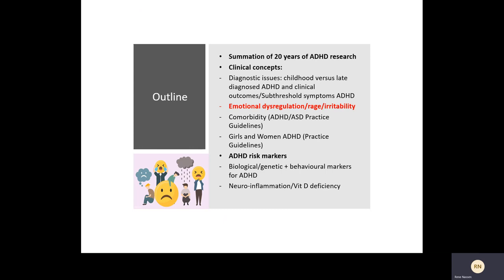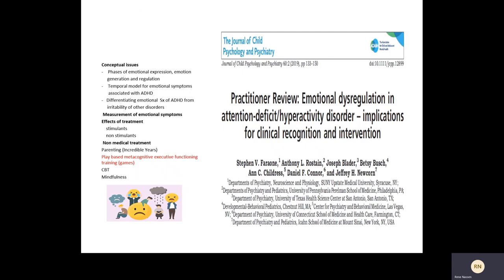Moving on, the next article is a review covering emotional dysregulation in children with ADHD, by Stephen Faraone and colleagues, published in the Journal of Child Psychology and Psychiatry in 2019. I was attracted to this paper as I currently have a few patients in my ward with extreme emotional dysregulation and aggression, all three with multiple comorbidities but with ADHD being the common diagnosis. The review covers conceptual issues around how we conceptualize and describe emotion symptoms, measurements, and the effects of treatment — covering only stimulants and non-stimulants — and non-medical interventions for both children and adults.